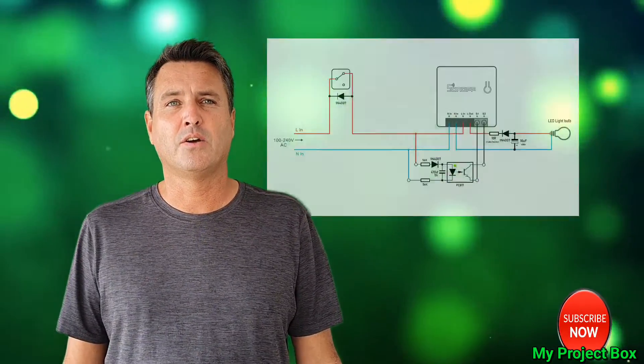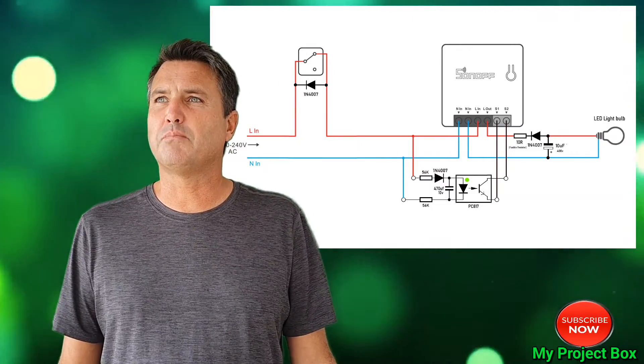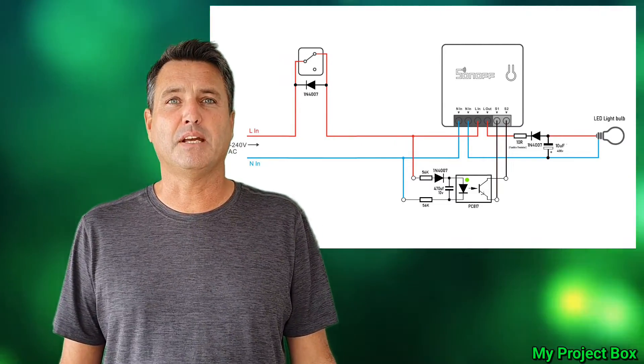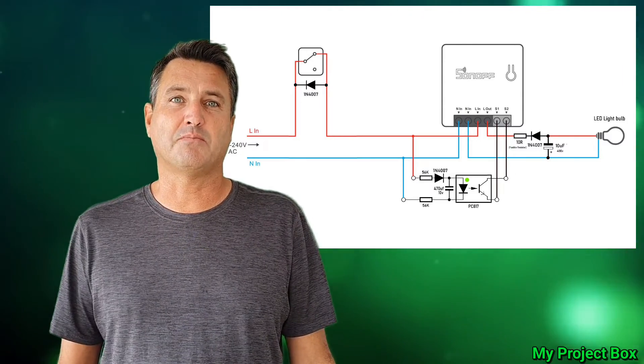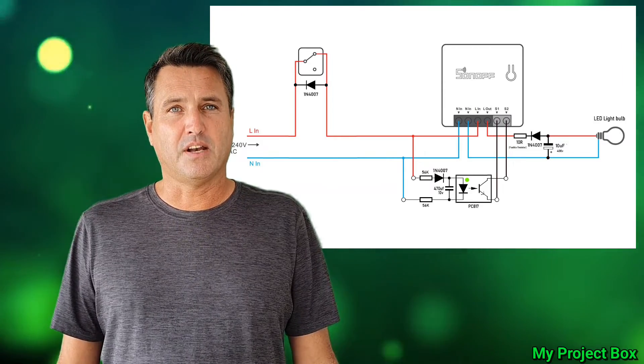Now this relates to a question in the comments about two-way lighting with one of my circuit hacks where you can put the Sonoff Mini behind one of the light fixtures so that it gets better Wi-Fi reception and also if you don't have a neutral behind the light switch.